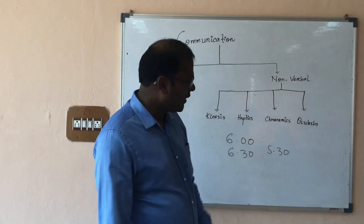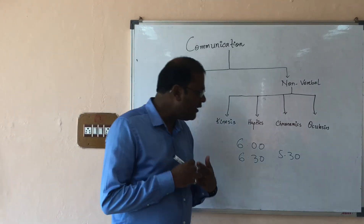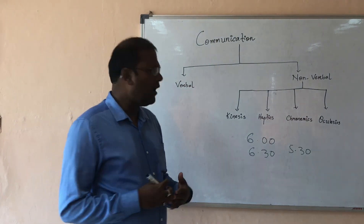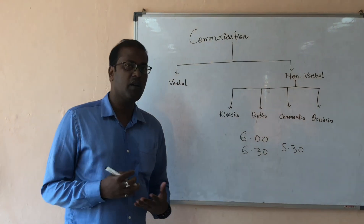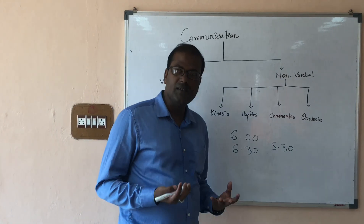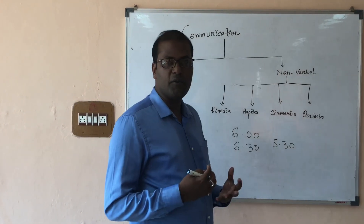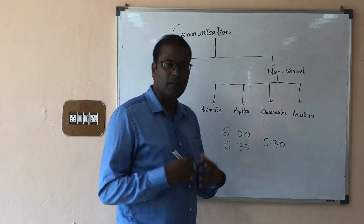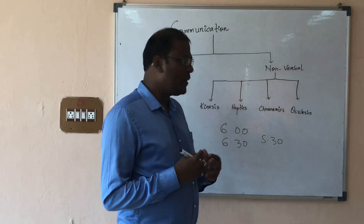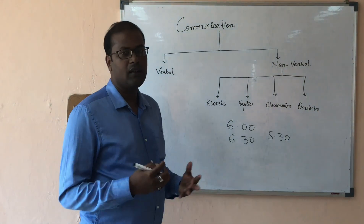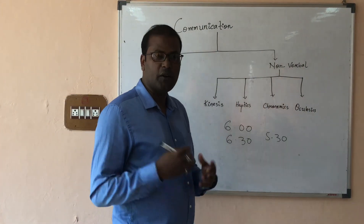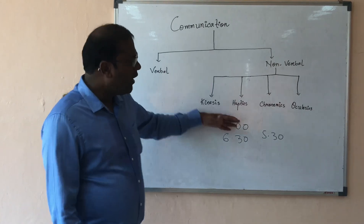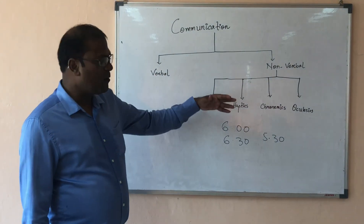The last concept is oculesics — communication through the eye, or eye contact. The eyes are supposed to be the most communicative part of the human body. People can identify a lot about us through our eyes — whether we are sad, happy, aggressive, or disgusted. Frowning of the eyebrows and widening of the eyes sometimes indicates displeasure or surprise. Frequently closing or flickering down the eyelids indicates nervousness or disinterest in the communication process.